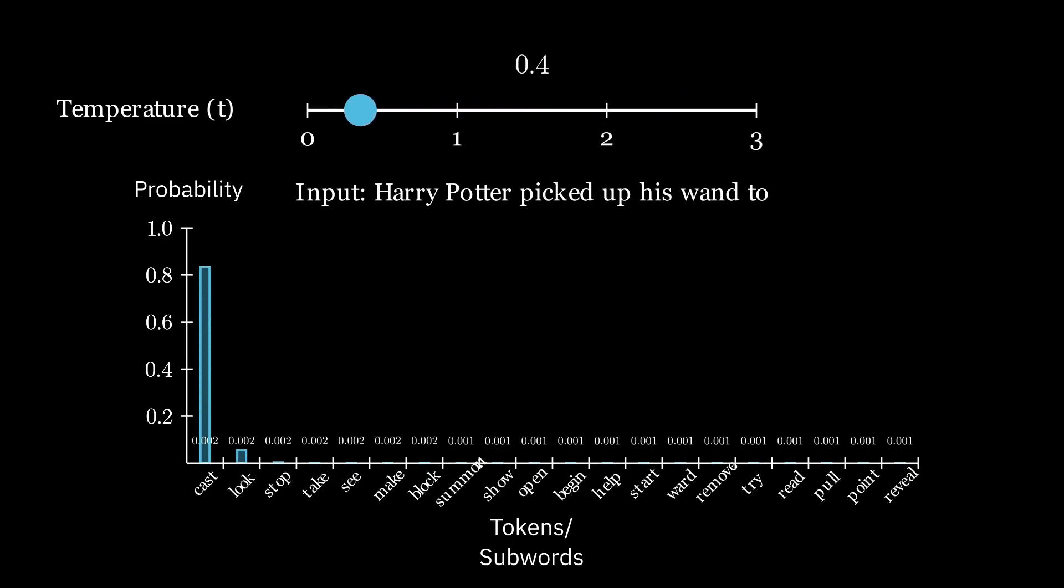When the temperature values are lower, the model tends to choose high probability tokens consistently, leading to more focused and deterministic outputs. This is due to the probability distribution becoming skewed, where a few tokens dominate the selection process.